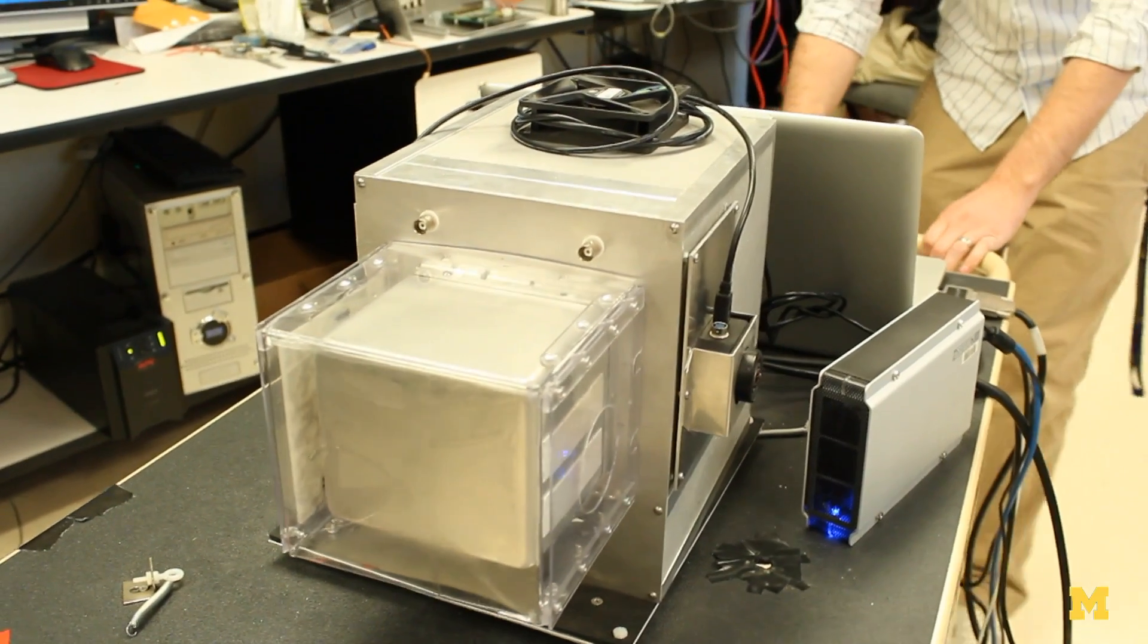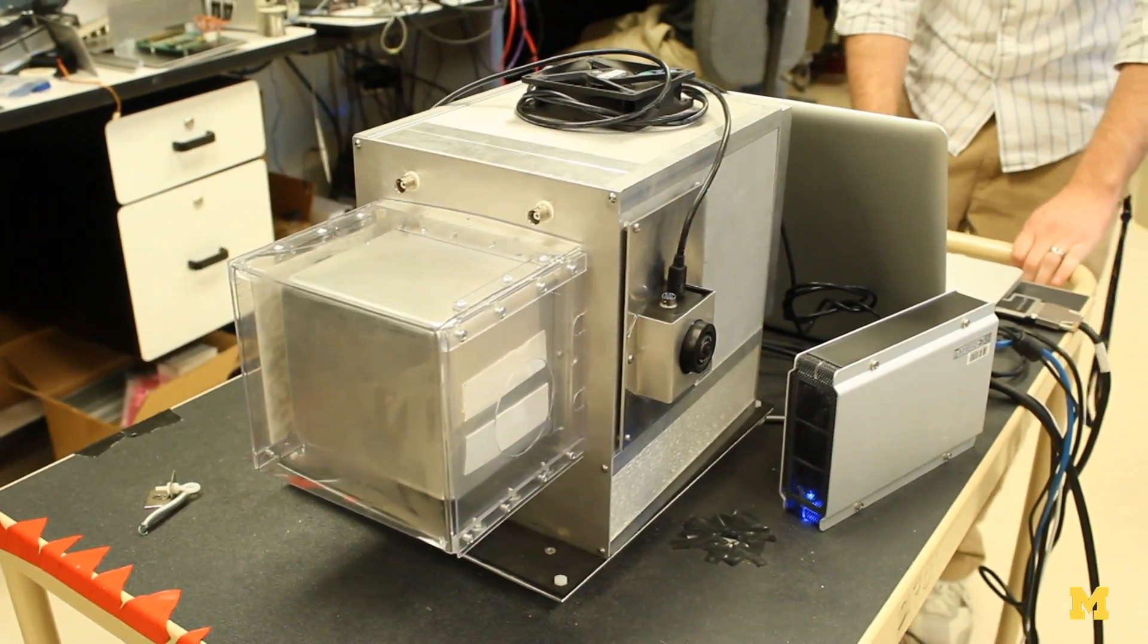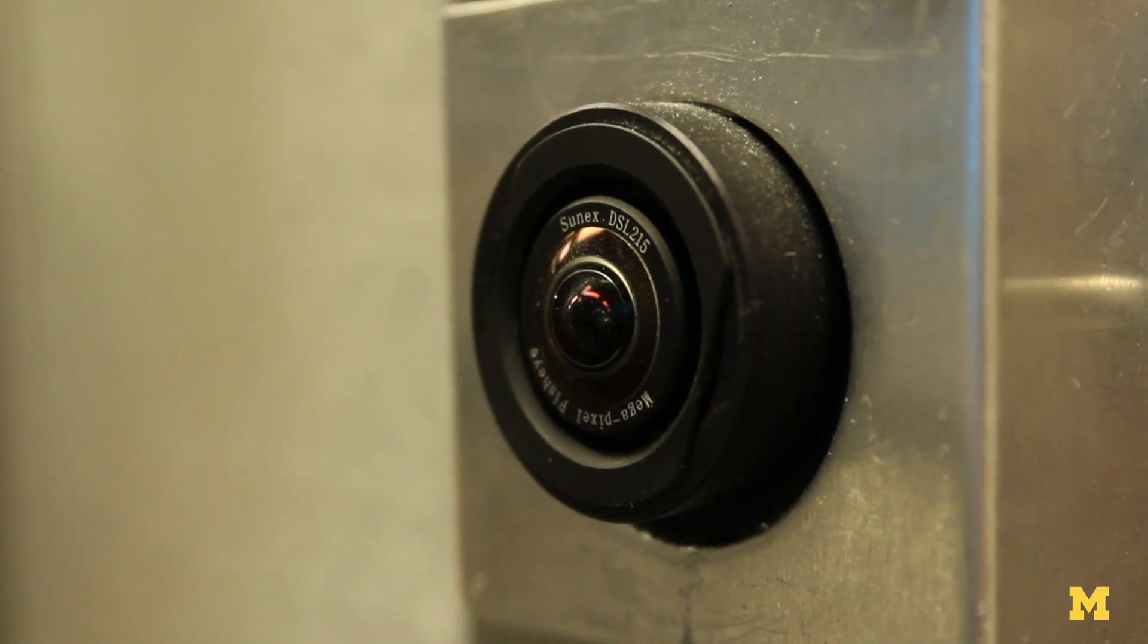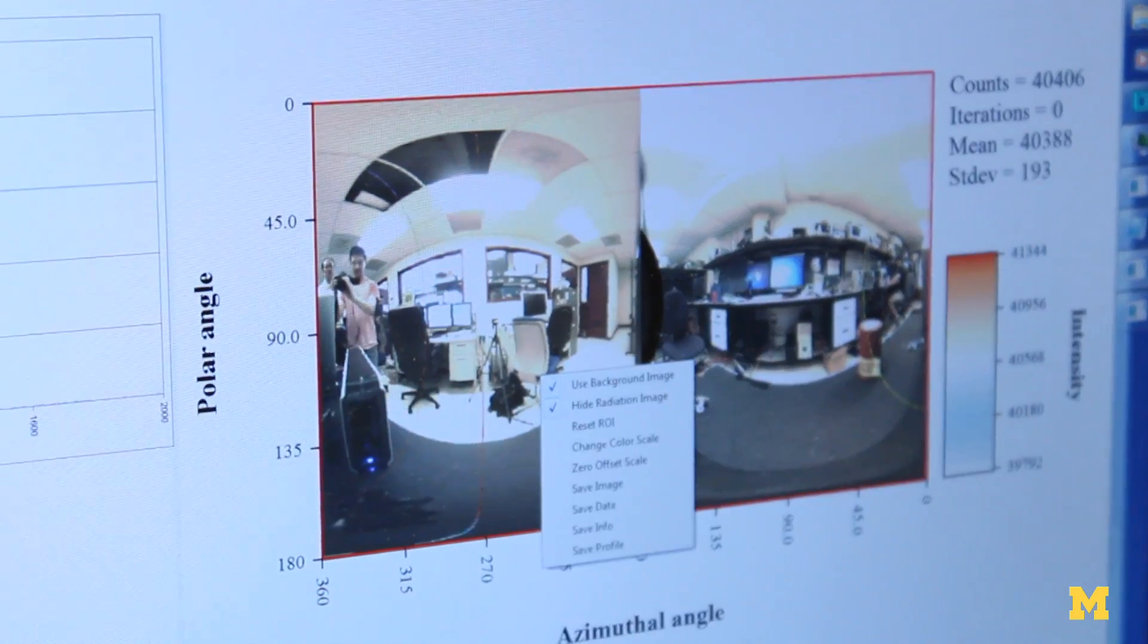We have an optical camera on both sides. Each optical camera has a fisheye lens that captures more than 180 degree optical images. So using both images, we can form a 4-pi optical image surrounding the detector.